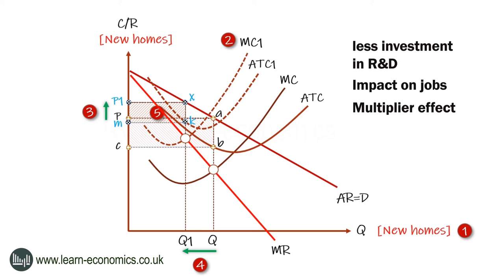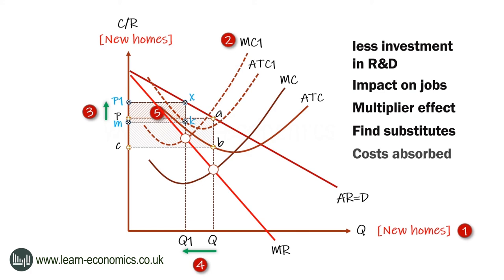In the longer term, house builders may look to source from different suppliers or use substitute materials. Of course, we are not told how much the price of cement increases. A small increase in the cost of cement could be assimilated into profits with no increase in price. This would depend on the pricing strategy used by house builders — using a cost-plus formula will automatically mean price will rise.